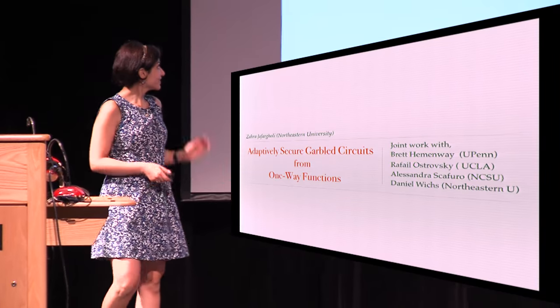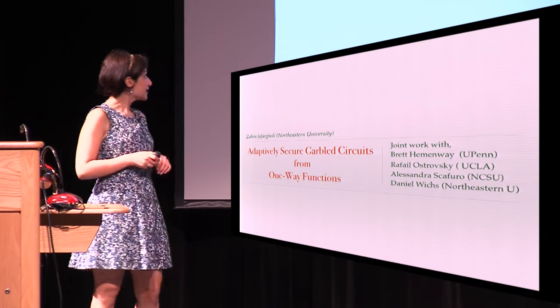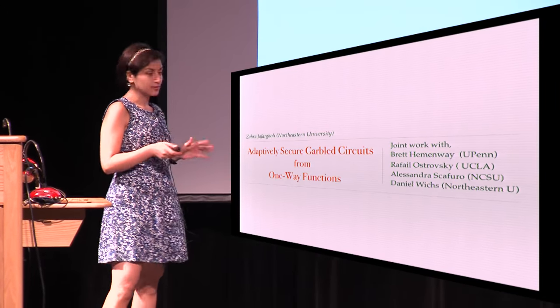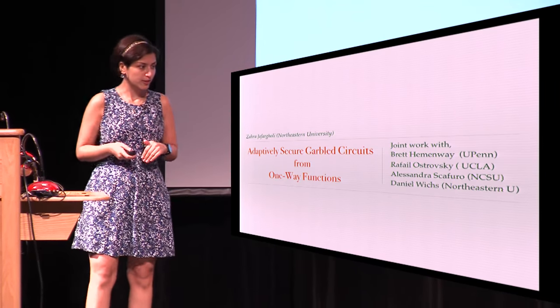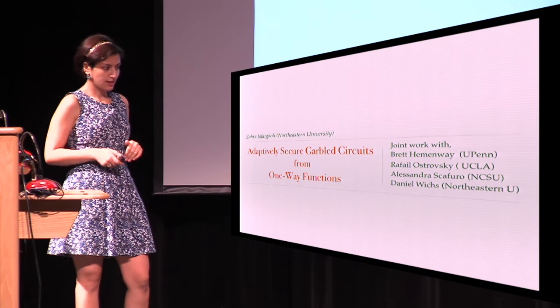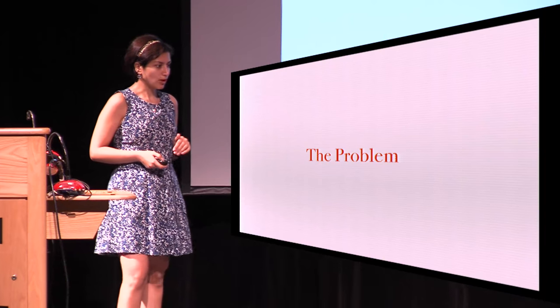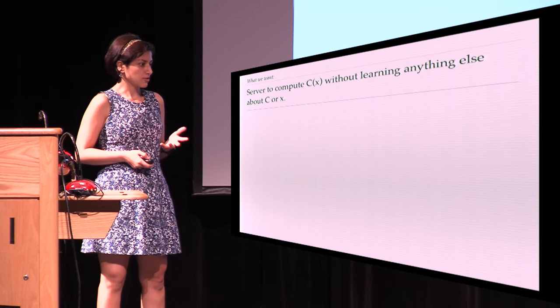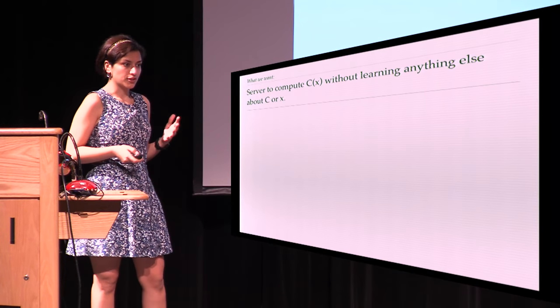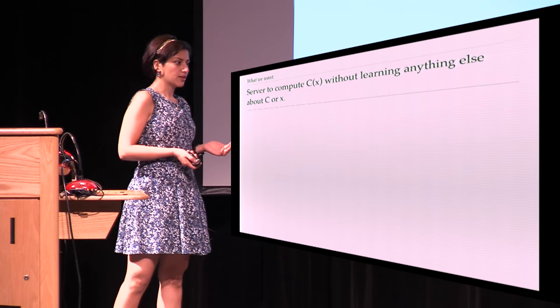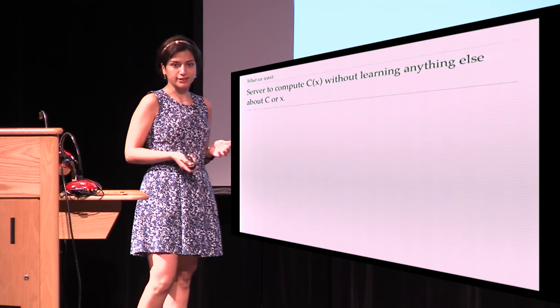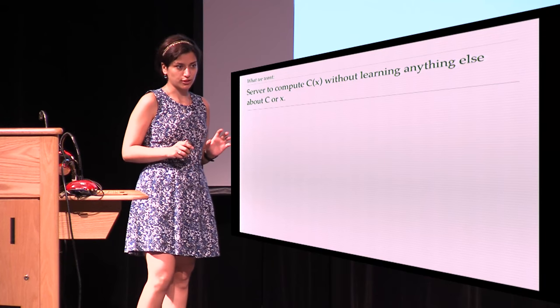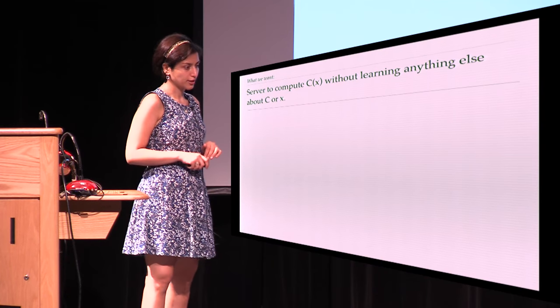Thank you, Alessandra. I'm going to tell you about adaptively secure garbled circuits from one-way functions. The problem: I want a server to compute a circuit on an input without learning anything else about the circuit or the input.